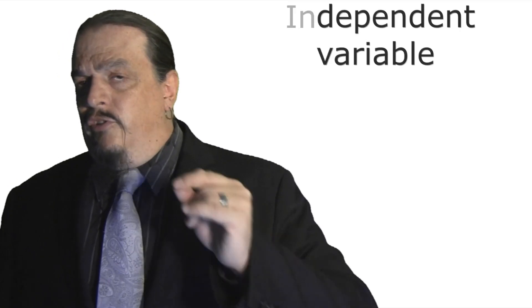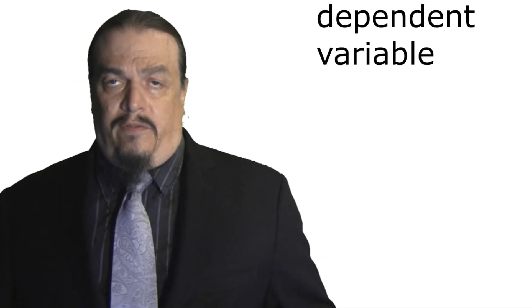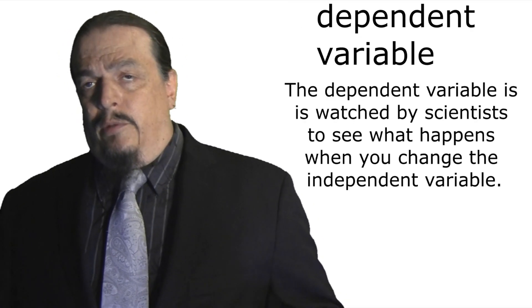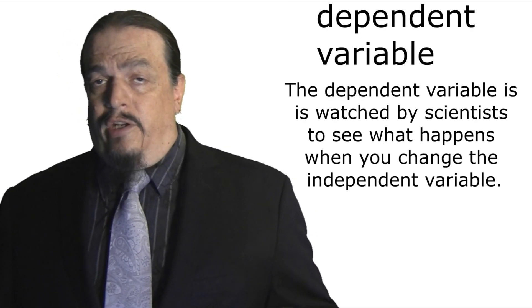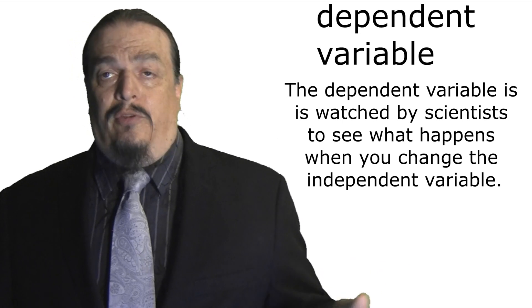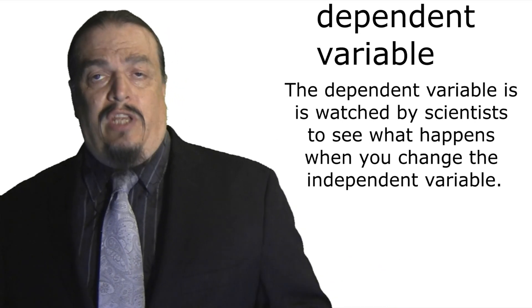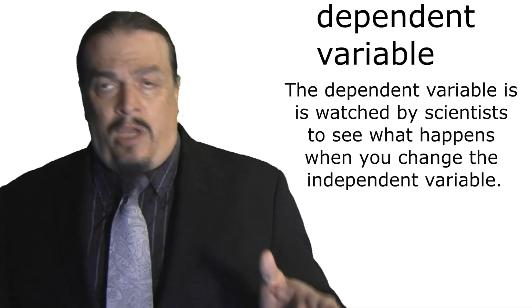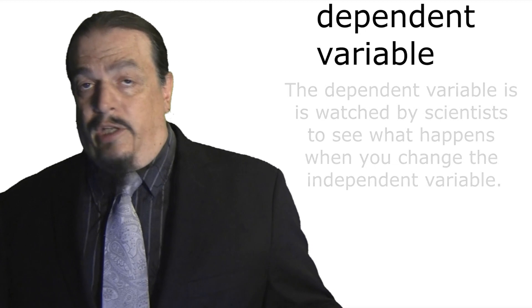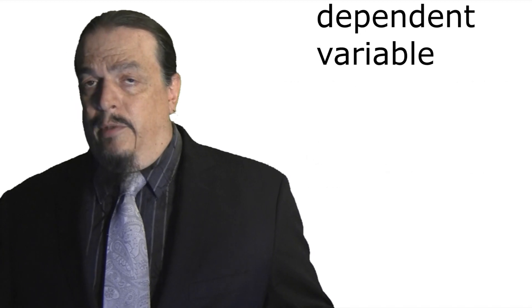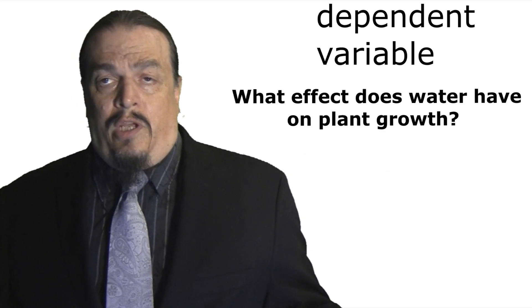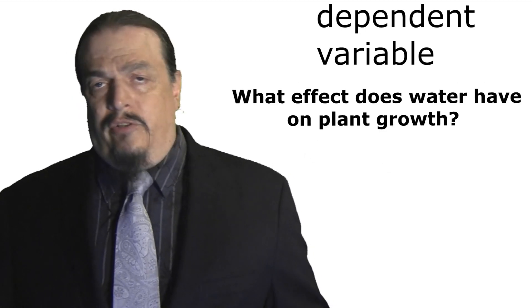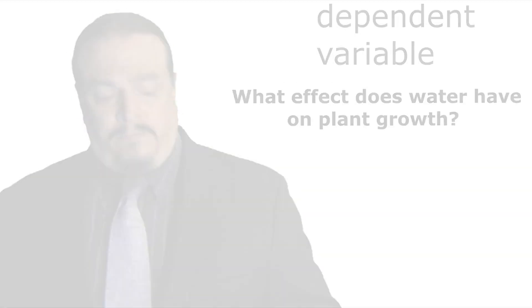Which brings us to the dependent variable. The dependent variable is watched by scientists to see what happens when you change the independent variable. Can you guess what the dependent variable is in the plant experiment? It's the plant growth we asked about in our original question.